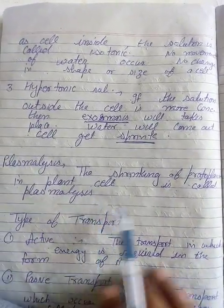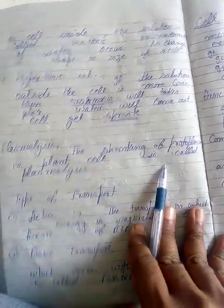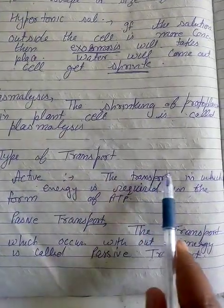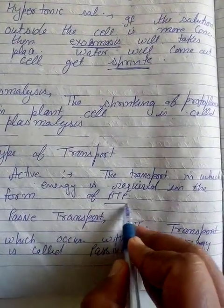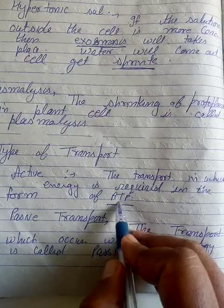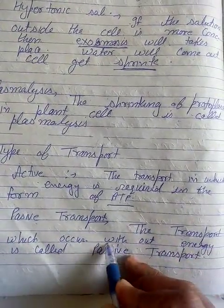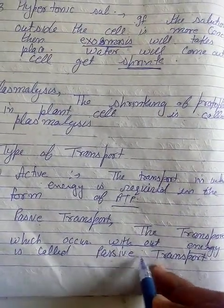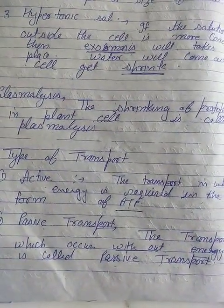Ab hum discuss karenge transport ki types — transport humare paas kitne type ka hota hai. Transport humare paas two types ka hota hai: ek active transport, jismein kya hoga — material ki movement hogi with the expenditure of energy. Aur jismein koi bhi energy ki requirement nahin hogi, use hum bolenge passive transport.